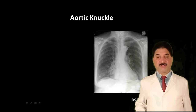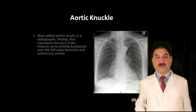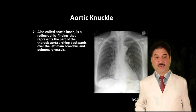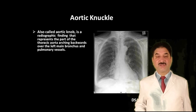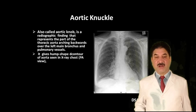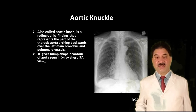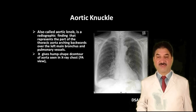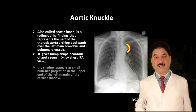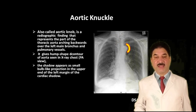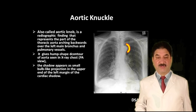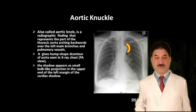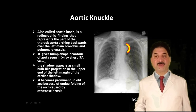What is the aortic knuckle? It is also called the aortic knob. It is a radiological finding representing the part of the thoracic aorta arching backwards over the left main bronchus and pulmonary vessels, giving a hump-shaped contour of the aorta seen on a chest X-ray. The aortic knuckle becomes prominent in hypertension due to underlying atherosclerosis. It appears as a small bulb-like projection at the upper end of the left margin of the cardiac shadow and becomes more prominent in old age due to undue folding of the arch caused by atherosclerosis.